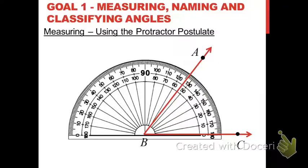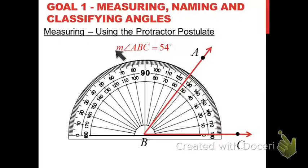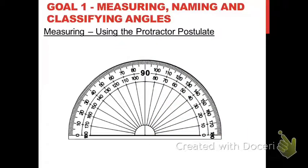Before we go on, let's make sure you know the notation associated with giving the measurement of an angle. Whenever you're trying to tell what the measurement of an angle is — how many degrees the angle is — you write the name of the angle with a lowercase m in front of it, which means 'the measure of.' This says: the measure of angle ABC equals 54 degrees. We could have also said the measure of angle B, or the measure of angle CBA — no matter what you name it, 54 degrees is the measure.